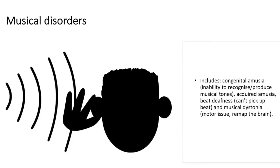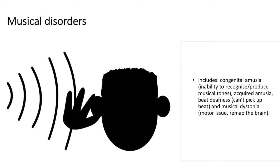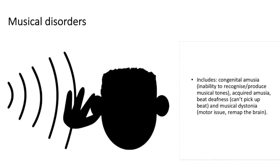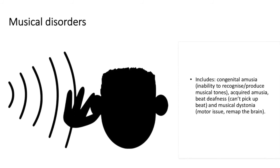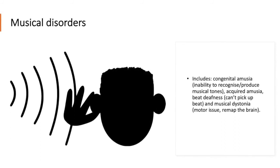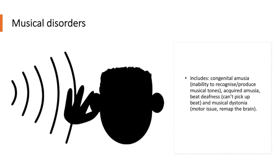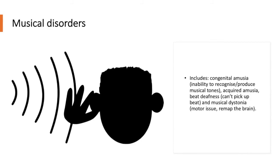And finally, there are musical disorders, which includes congenital amusia, which is the inability to recognize or produce musical tones, acquired amusia, beat deafness, which is where individuals can't pick up the beat, and there's musical dystonia, which is a motor issue, and as a result, remaps the brain.